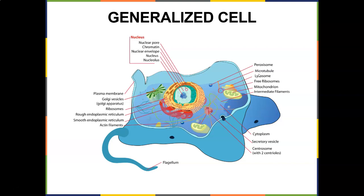You have peroxisomes and microtubules. Lysosomes are like little Pac-Man — they go in and chomp off cellular debris, cleaning up the cell. Then you have mitochondria, which is the powerhouse of the cell. You also have centrioles — a pair — that help initiate mitosis.